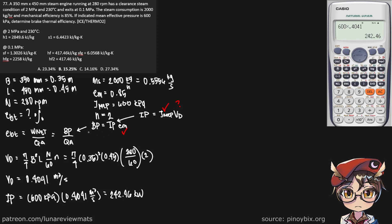Okay, so now we can find our brake power. The brake power is simply our indicated power multiplied by our mechanical efficiency, 0.85. And we get a value of 206.091 kilowatts for our brake power.